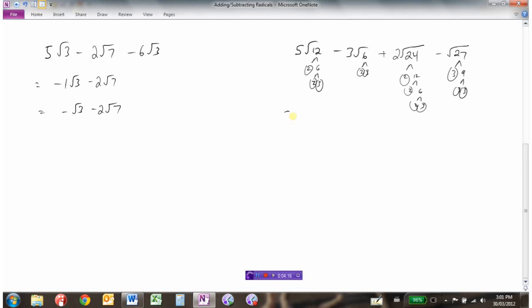So breaking this one down, the √12 is actually 2 × 2 × 3. The √6 is 2 × 3 and that one can't be simplified. This one was 2 × 2 × 2 × 3 and this one was 3 × 3 × 3.